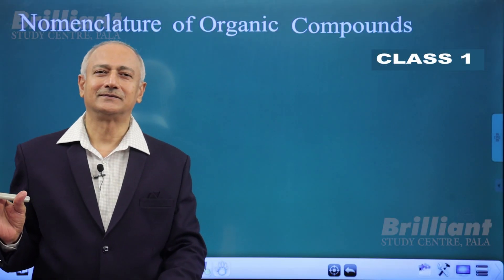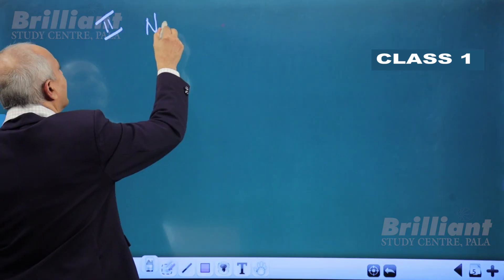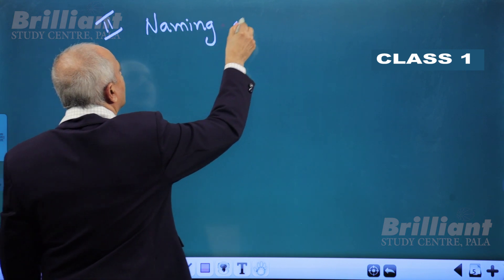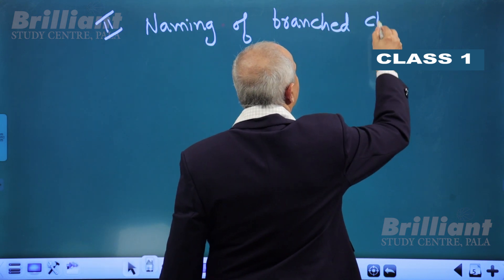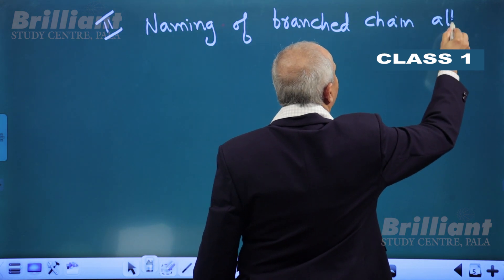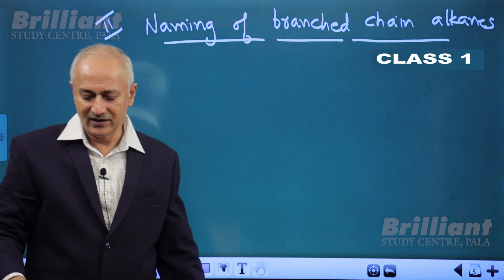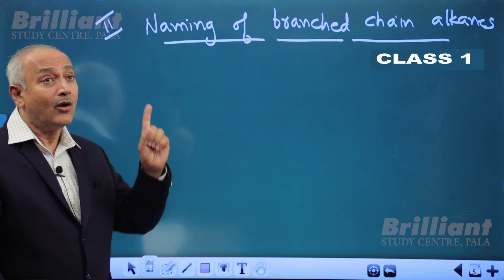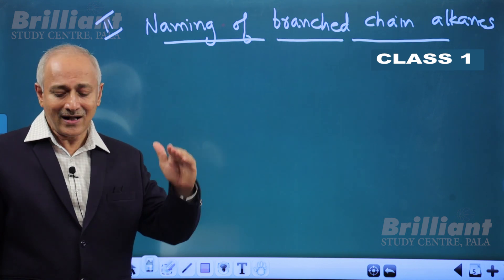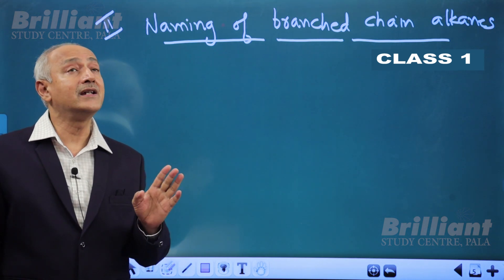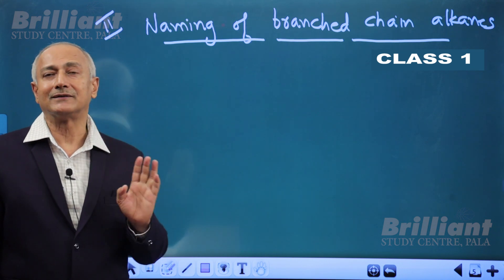Good morning students. The topic I wish to discuss with you is nomenclature of organic compounds — specifically, naming of branched chain alkanes. The carbon chain is branched. Alkanes from butane onwards — butane, pentane, hexane — all have isomers which have a branched carbon chain, so this structural or chain isomerism starts from butane onwards.